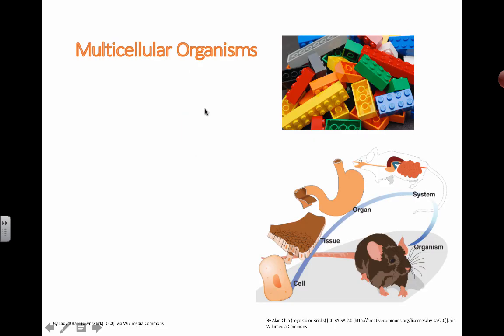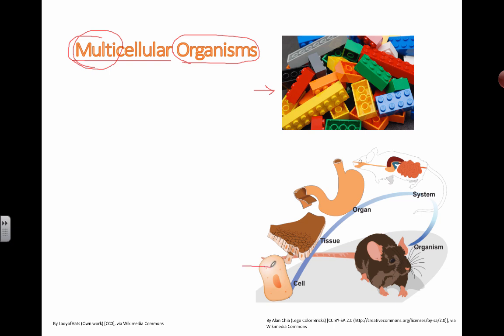You are a multicellular organism — that means you are a living thing made up of many cells. Think of it like Lego blocks: if you put a bunch of Lego blocks together, you can build something. Here is one cell. When a bunch of cells are next to each other, they can be grouped together into something called a tissue.